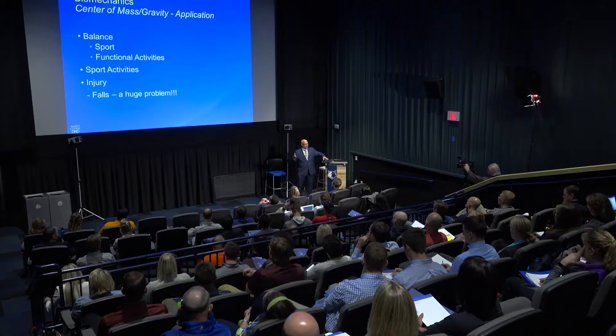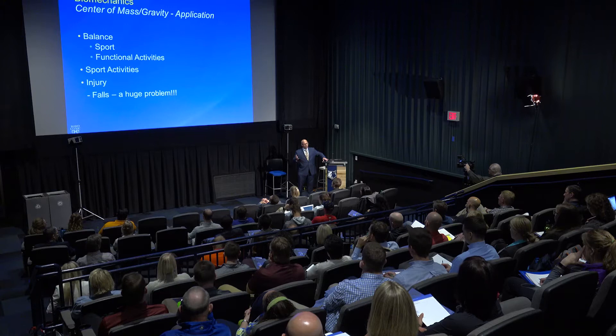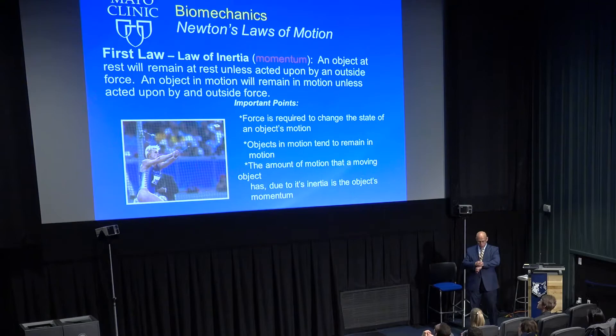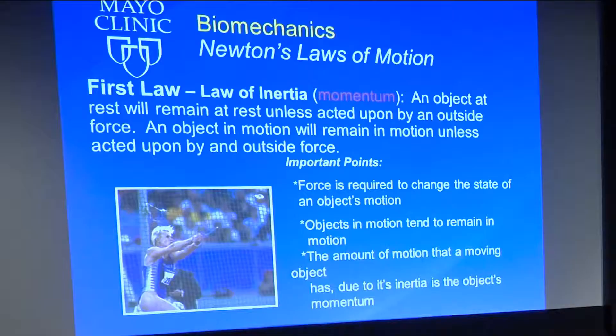This is really important in balance, sport, and functional activity, and also in falls. There's a whole group here at Mayo that studies falls in the elderly and how gravity's effect on the center of mass relates to long-term health outcomes. By definition, the center of mass is the point around which the mass of the body is equally distributed. External mass — for example, a bat held in someone's hand — will change the center of mass. It has crucial relationships to balance, base of support, height, amount of mass, and inertia.